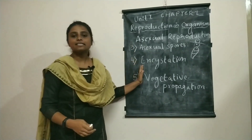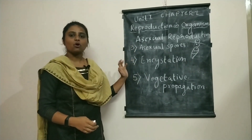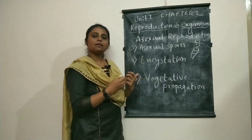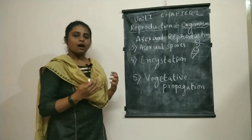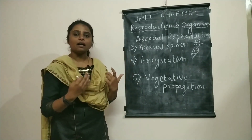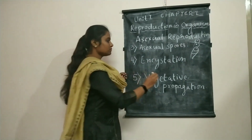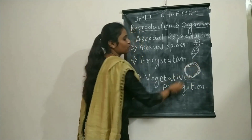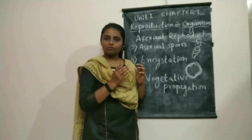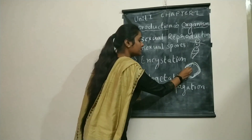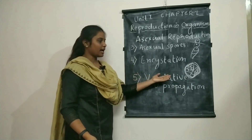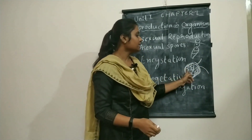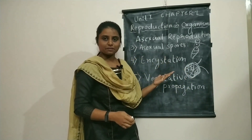The next type of asexual reproduction is encystation, which occurs only under unfavorable conditions. When conditions are unfavorable, the organism secretes chemicals that deposit around it, forming multiple hard layers called shells — a hard covering around itself. Before favorable conditions return, the organism divides itself into multiple cells. When conditions become favorable, it breaks open and releases these small cells, each of which can develop into a complete individual organism.